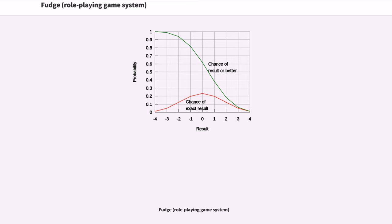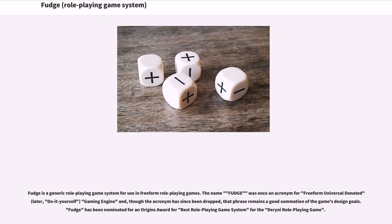Fudge is a generic role-playing game system for use in freeform role-playing games. The name Fudge was once an acronym for Freeform Universal Donated, later Do-It-Yourself Gaming Engine. Though the acronym has since been dropped, that phrase remains a good summation of the game's design goals. Fudge has been nominated for an Origins Award for Best Role-Playing Game System.